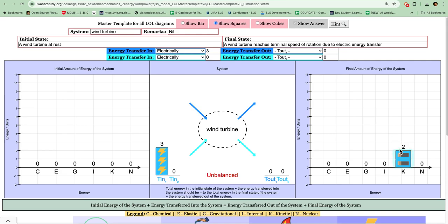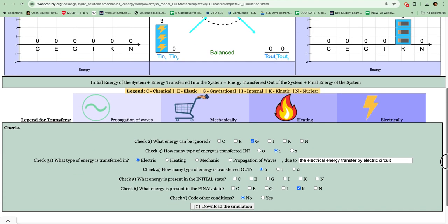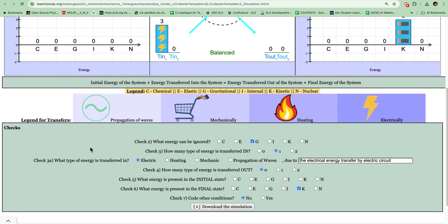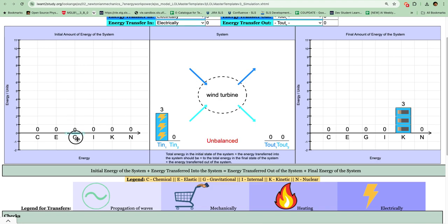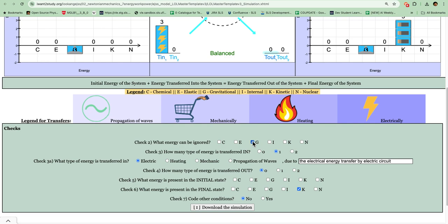To make sure that you have all the correct check boxes selected, you need to come down to the checks. Check number two ignores the energies that must be zero. In this case, if the gravitational potential energy can be non-zero, for example if I want to consider something with negative potential energy, then this would have to be selected. It is defaulted to be non-zero so you can check the rest that must be non-zero.